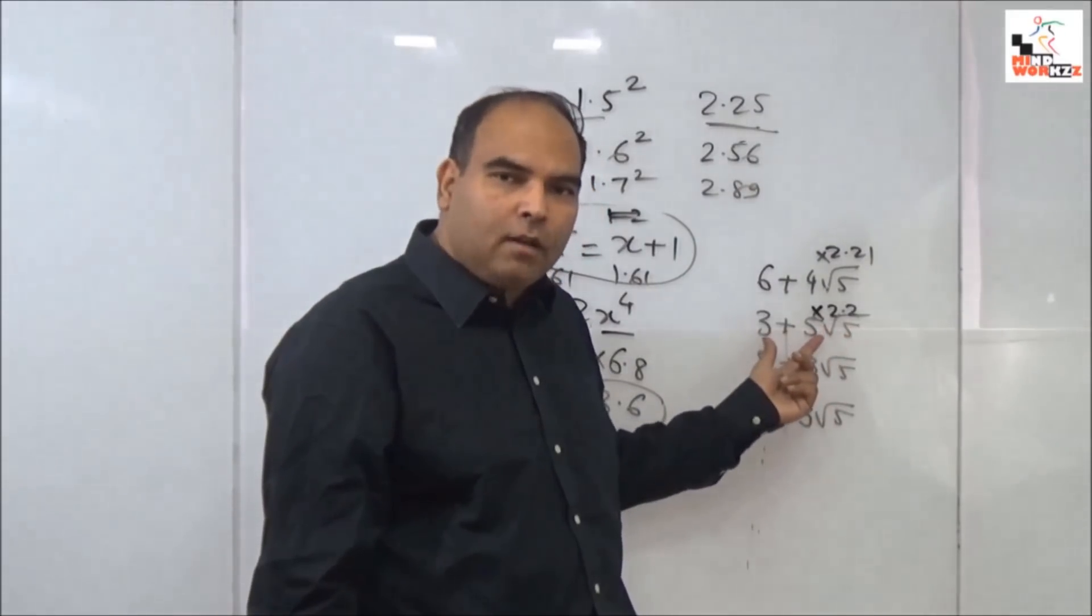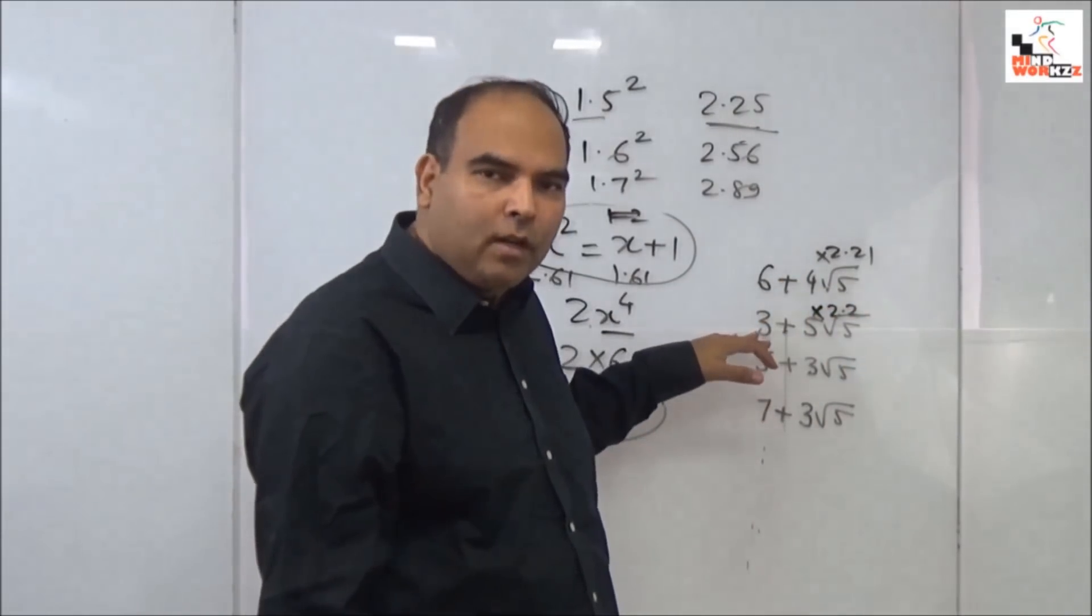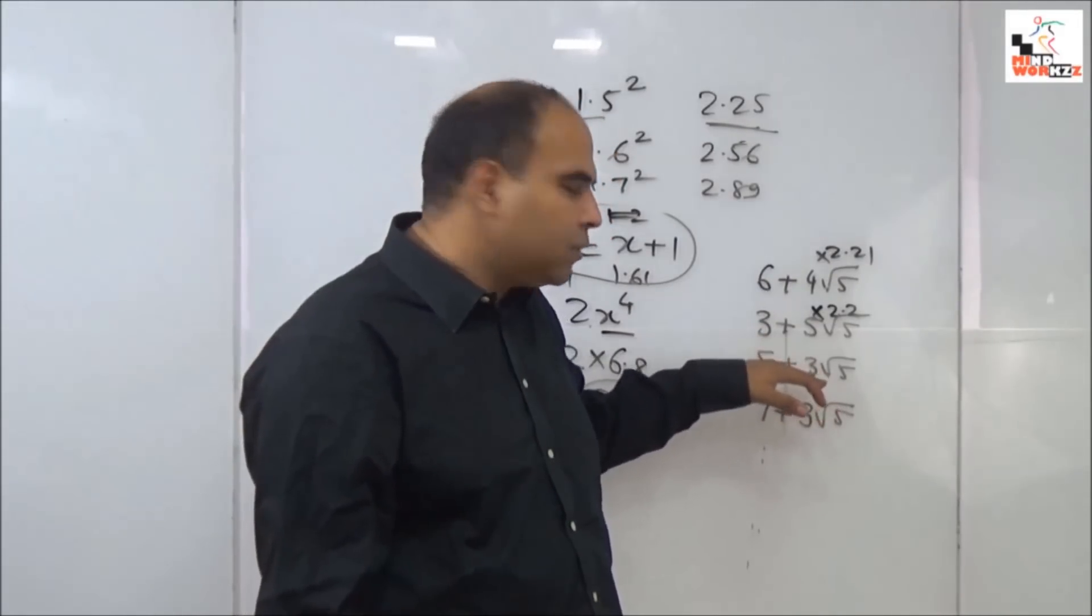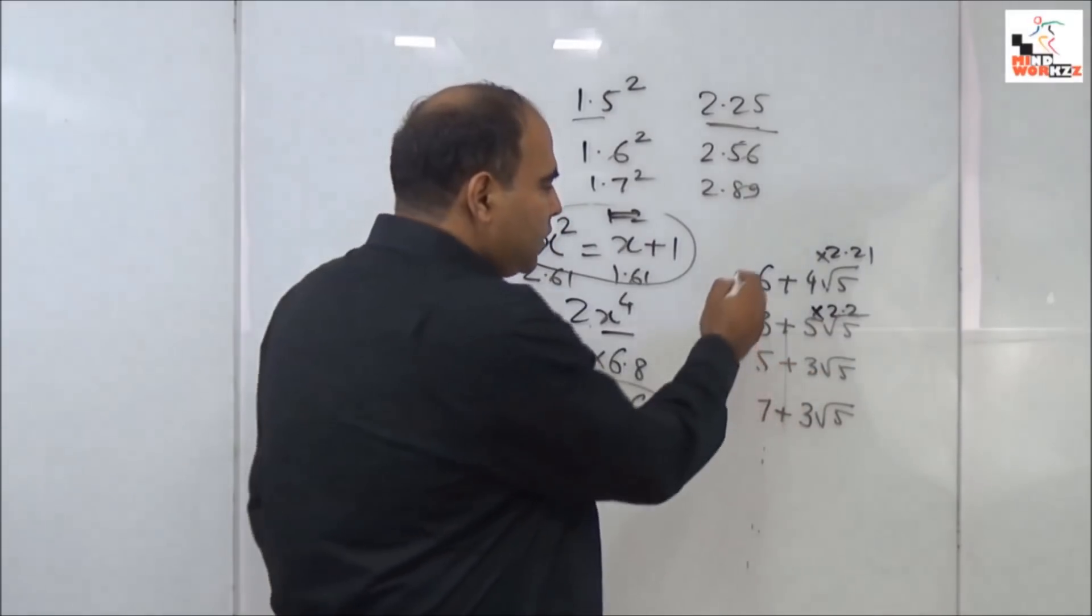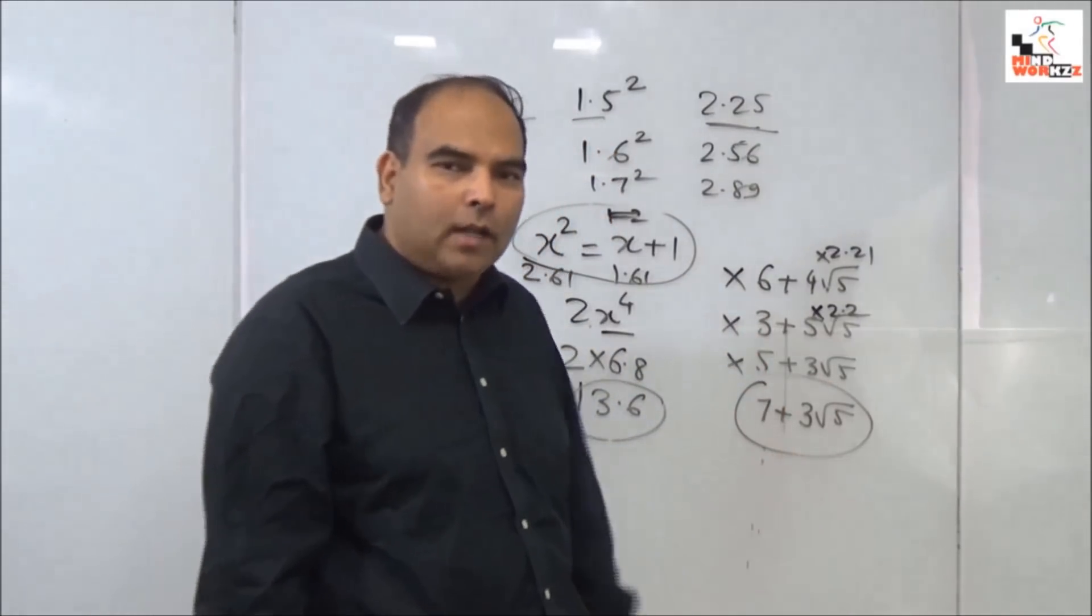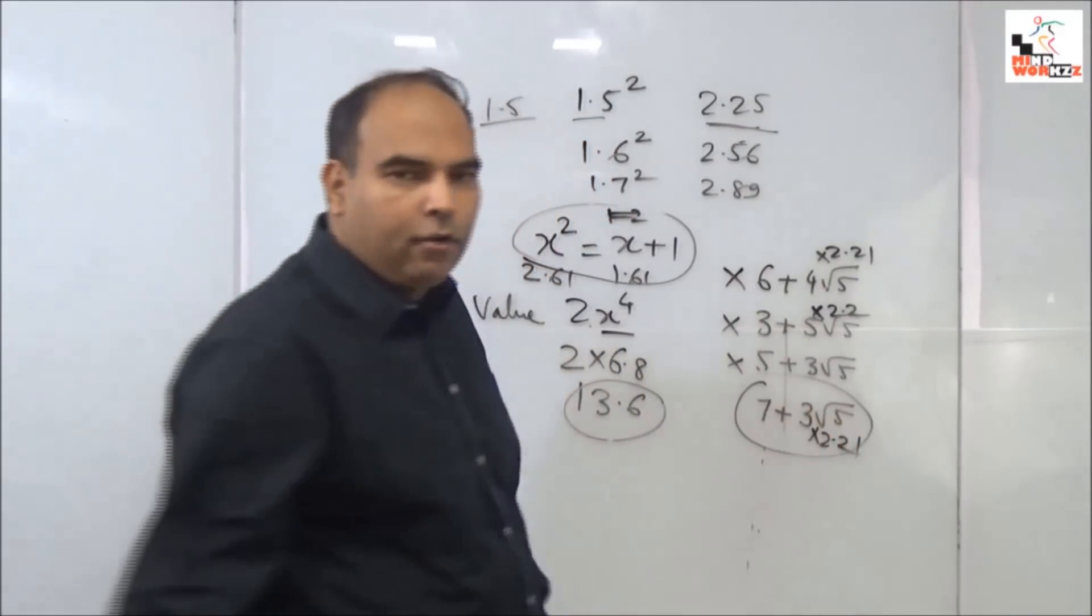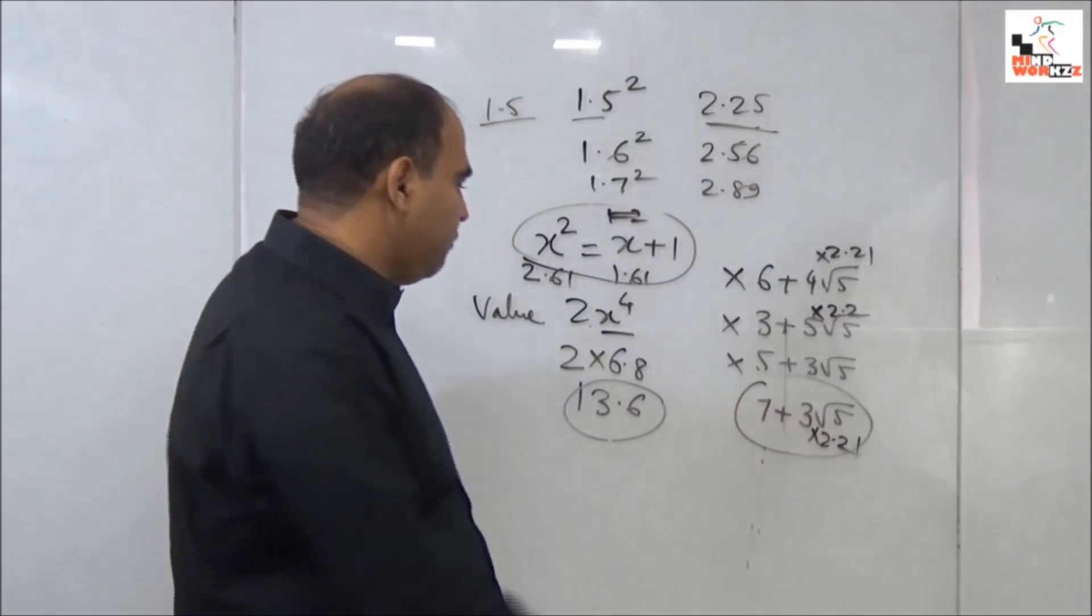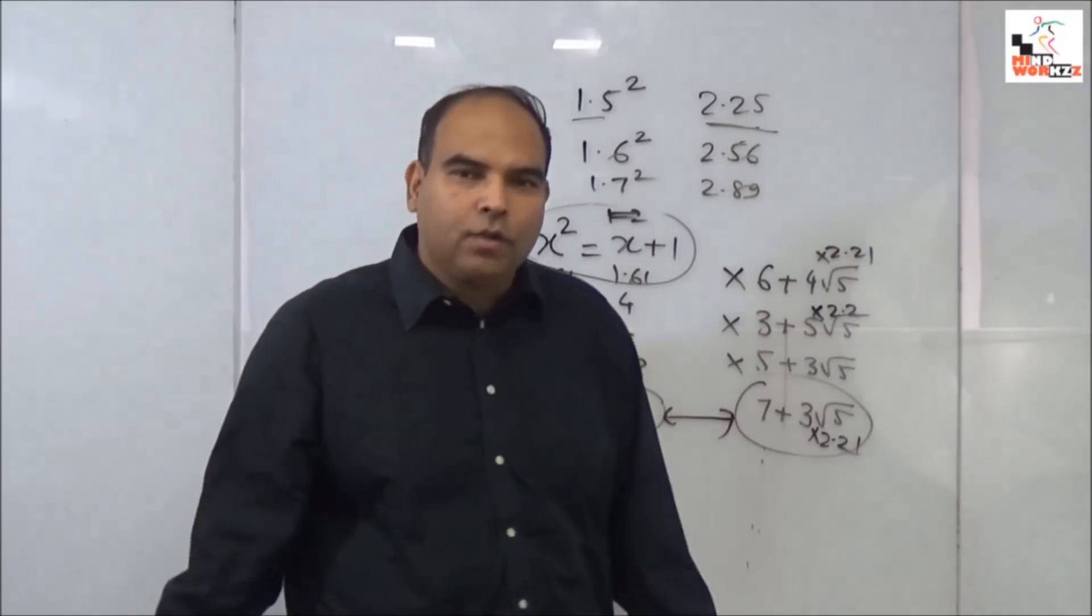The third option, 5 + 3√5 where √5 = 2.2, gives you 6.6, so that's 11.6, which is too small. So all the first 3 options get rejected. If you look at the fourth option, it actually gives you a good answer because 3 × 2.21 = 6.6 + 7 = 13.6, which is almost exactly what value you needed. You're out of this question in around 35 seconds.